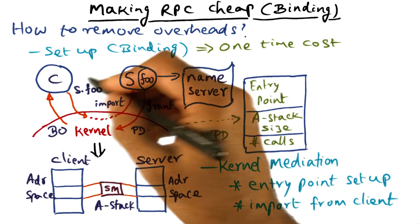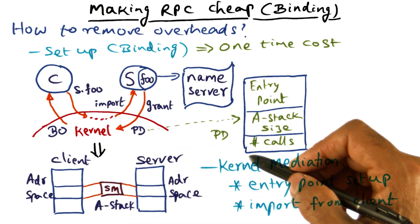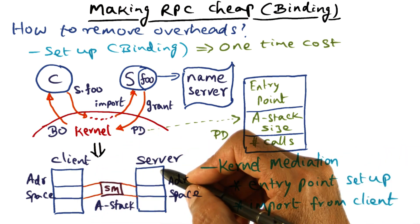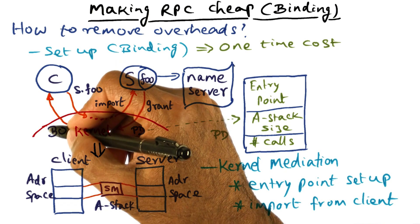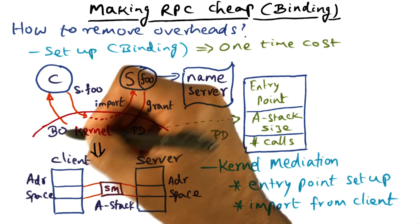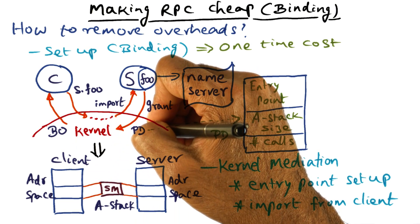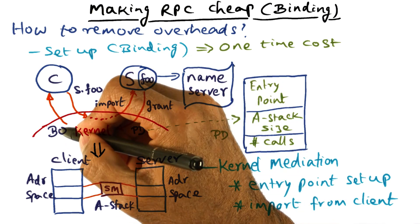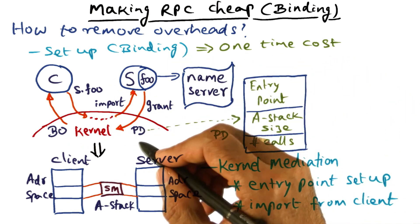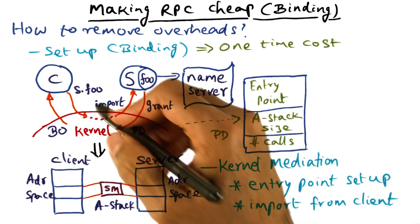All the work described up until now is the kernel mediation that happens in terms of entry point setup on the first call from the client. On the first call from the client, all of this magic happens in order to set up the communication buffer between the client and the server, and to authenticate the client so that future calls on this particular entry point procedure can be made by presenting the binding object (BO) to the kernel. The kernel knows that this binding object and this procedure descriptor are related, so it can find the entry point to call into the server. This kernel mediation happens only one time, on the first call by the client.